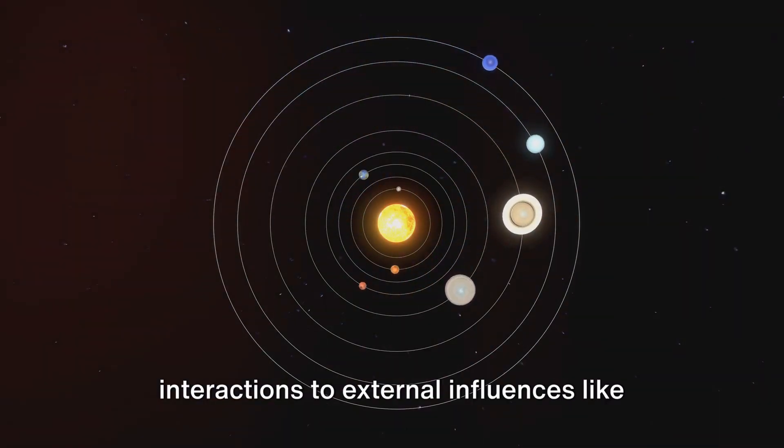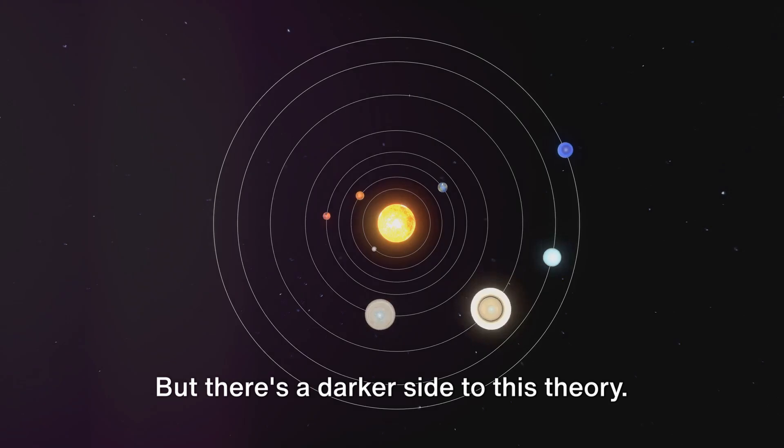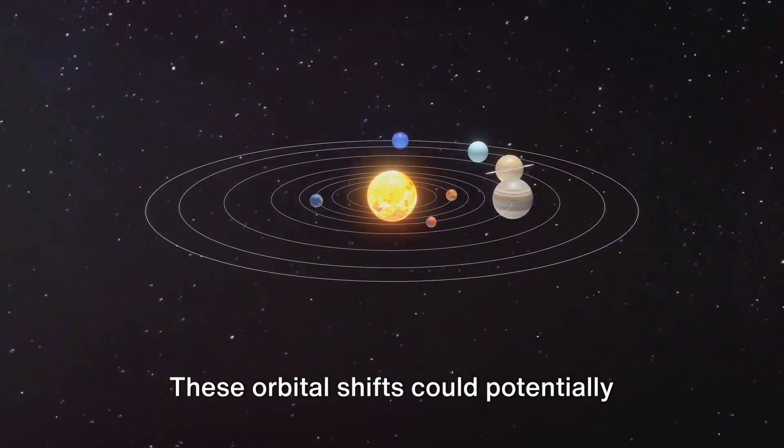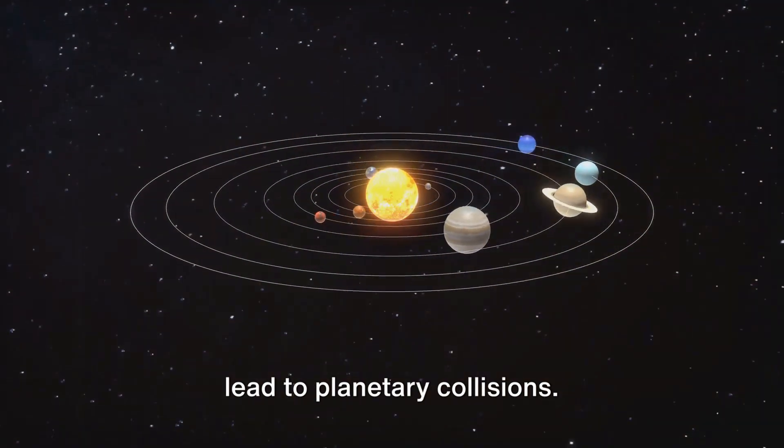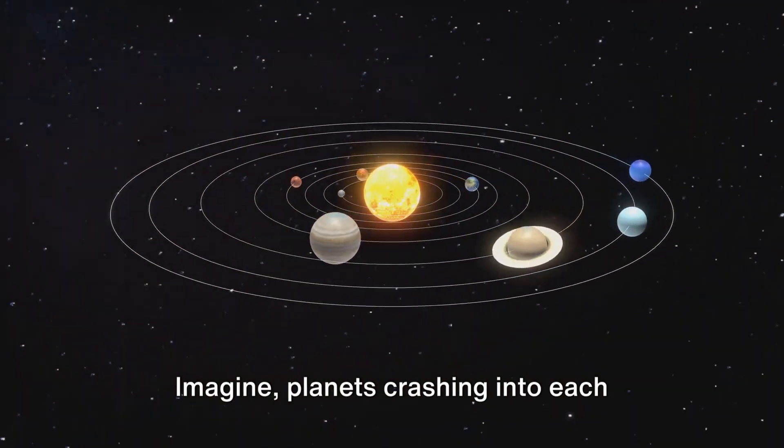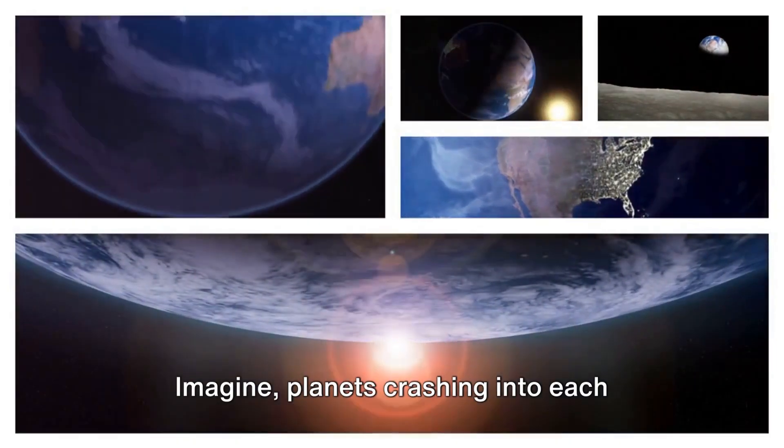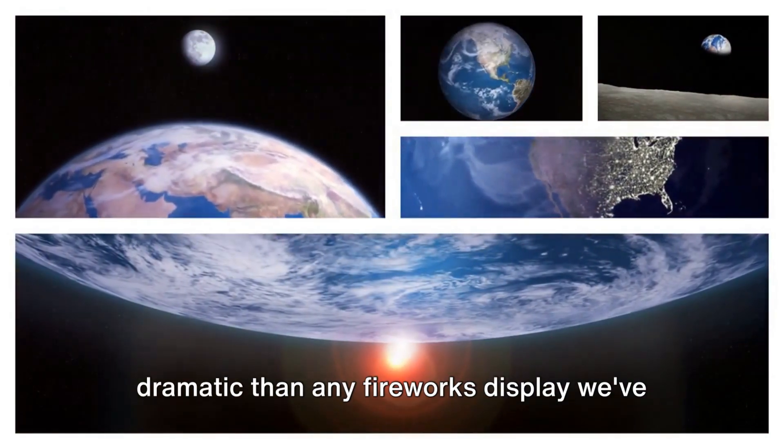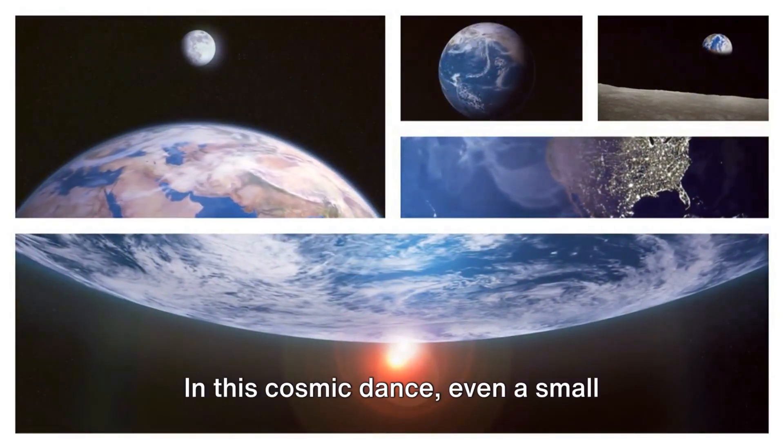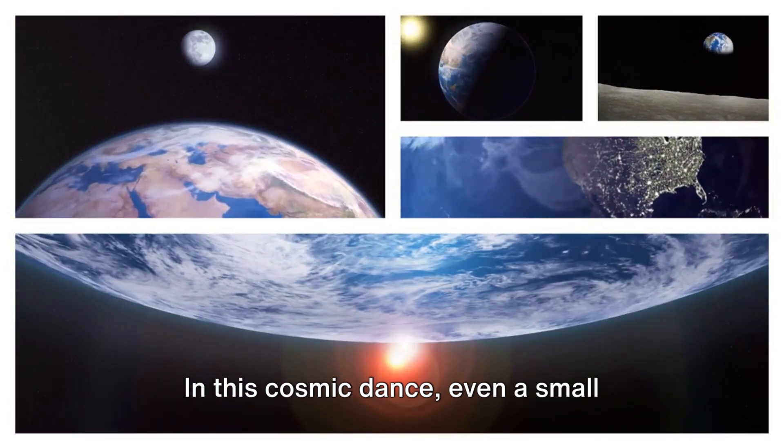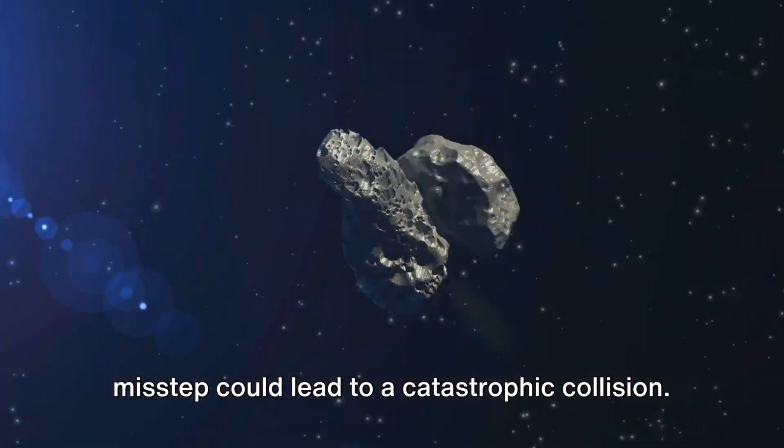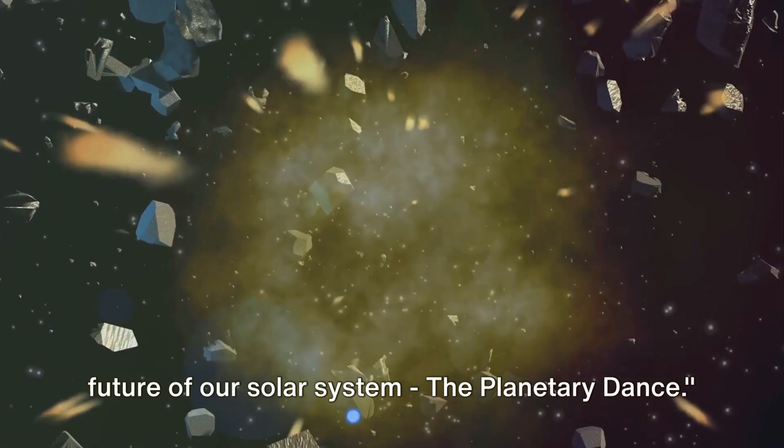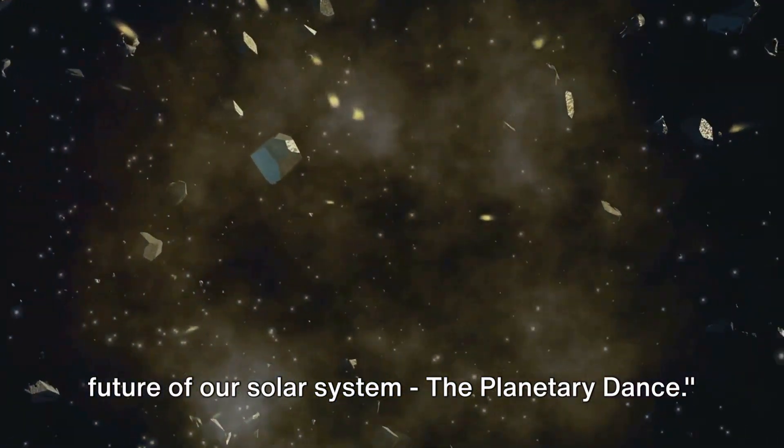But there's a darker side to this theory. These orbital shifts could potentially lead to planetary collisions. Imagine, planets crashing into each other, creating a spectacle far more dramatic than any fireworks display we've ever witnessed. In this cosmic dance, even a small misstep could lead to a catastrophic collision. This is the eighth theory about the future of our solar system, the planetary dance.